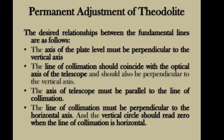Number three: the horizontal axis must be perpendicular to the vertical axis. Number four: the axis of the telescope must be parallel to the line of collimation. Number five: the line of collimation must be perpendicular to the horizontal axis, and the vertical circle should read zero when the line of collimation is horizontal.